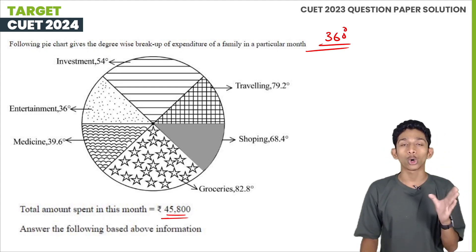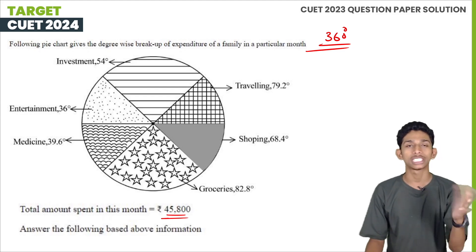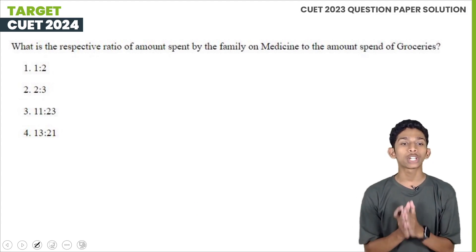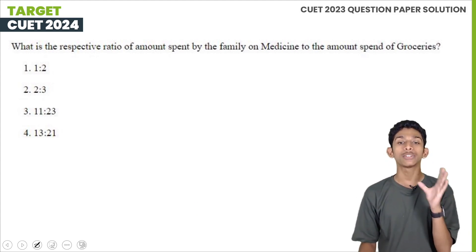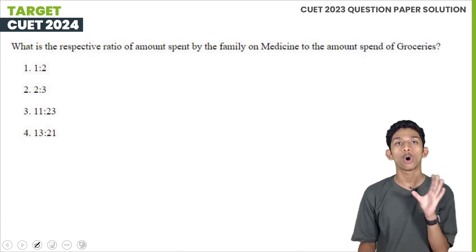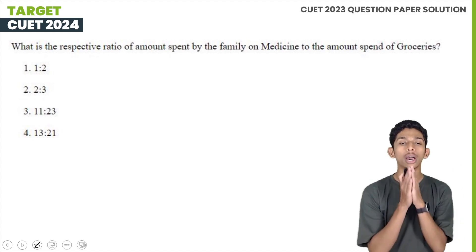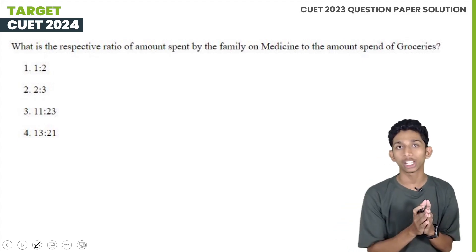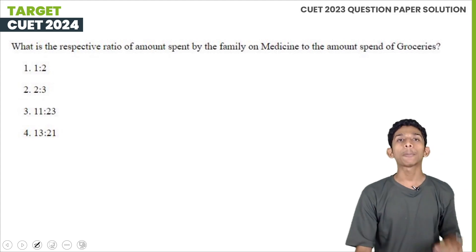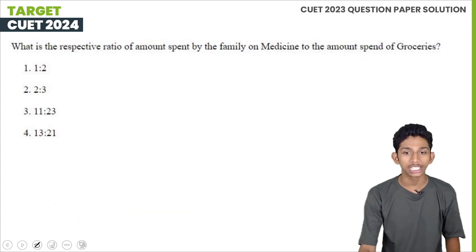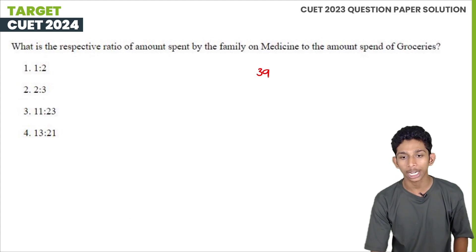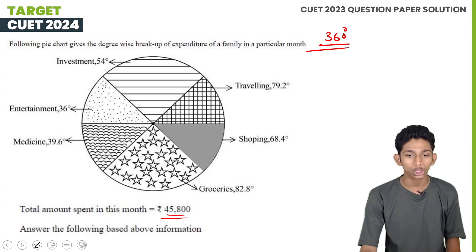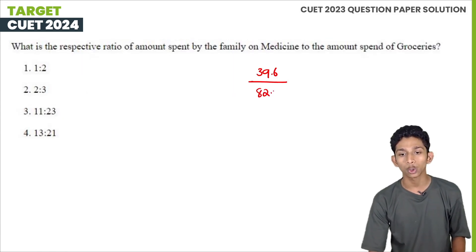Based on the above information, answer the following questions. First question: What is the respective ratio of amount spent by the family on medicine to the amount spent on groceries? Medicine is 39.6 degrees and groceries is 82.8 degrees.